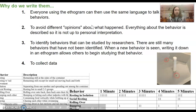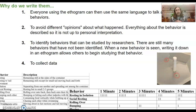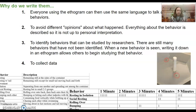So why do we write ethograms? We know they're a description of behavior, but why do we make them? There are four main reasons animal behaviorists write and create an ethogram. The first reason is so that everybody using the ethogram can use the same language to talk about behaviors — if two different scientists are discussing a behavior, they'll use the same word to describe it. The second reason is that it avoids people's opinions about what happened. As animal behaviorists, we want to talk about what we can prove or what we can see, and we collect data to prove what happened or describe directly what we observed.